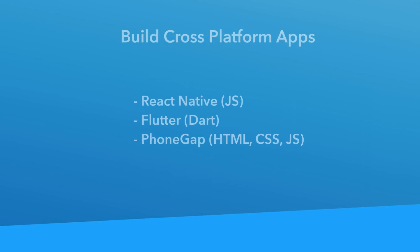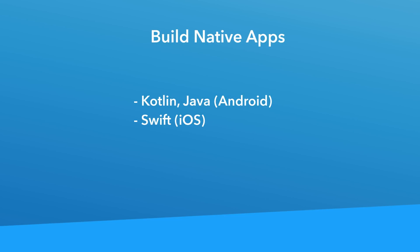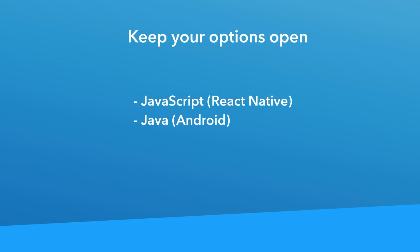If your goal is to build cross-platform apps, then I would say React Native is your best bet — it's got a larger community and more support compared to Dart and Flutter, plus learning JavaScript opens doors beyond mobile apps. If your goal is to provide the best experience possible, then go with the first-class language for the platform you're building for: Swift for iOS and Java or Kotlin for Android. If your goal is to keep your options open to explore other platforms and maximize job opportunities, then I would suggest sticking with JavaScript or Java.